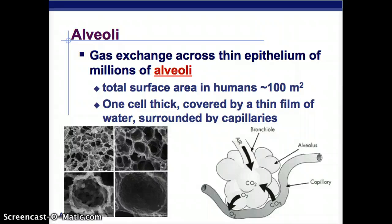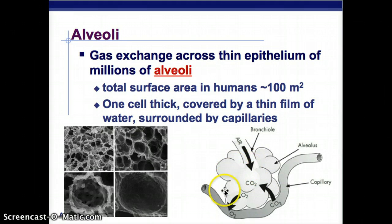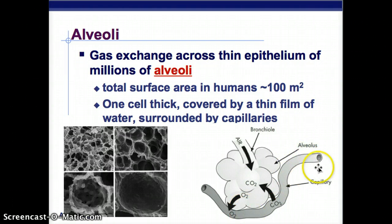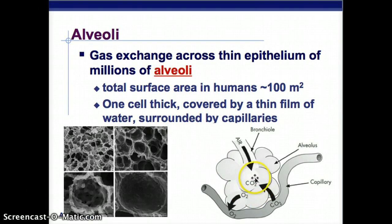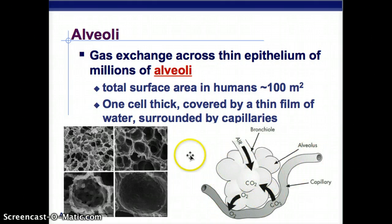Alveoli do gas exchange across a thin epithelium. Millions of alveoli are present - air comes in through the bronchi into each alveolus, and here's a capillary showing the circulatory system interacting with the respiratory system. The total surface area of that thin alveolar epithelium is about 100 square meters, it's only one cell thick, covered by a thin film of water for diffusion, and surrounded by capillaries.